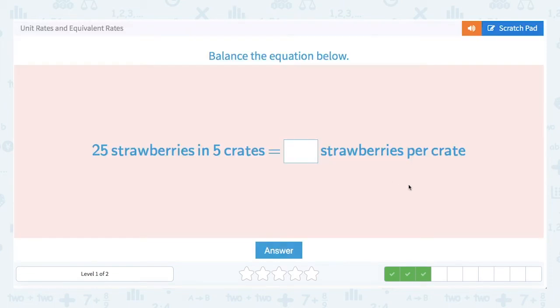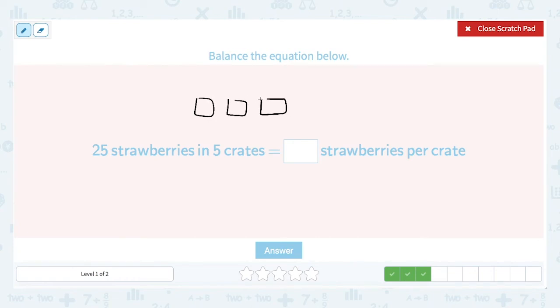25 strawberries in five crates. How many strawberries per crate? So again, I'm going to make some, let's turn on our scratch pad to do that. So there are my five crates. Those little boxes represent crates. And I've got a bushel over here of 25 strawberries. And I want to take these and divide them into five parts.